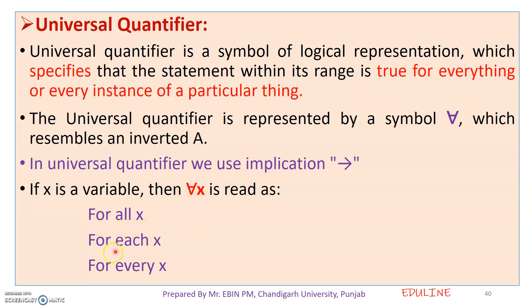We read the universal quantifier symbol as: 'for all x,' 'for every x,' or 'for each x.' This is how we can read it. That completes the universal quantifier symbol explanation.